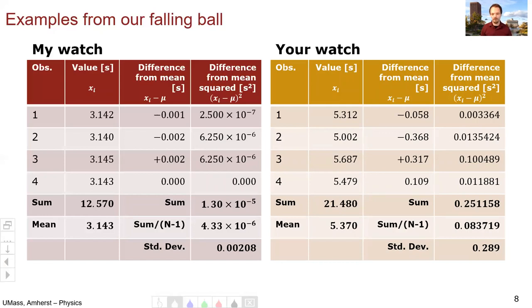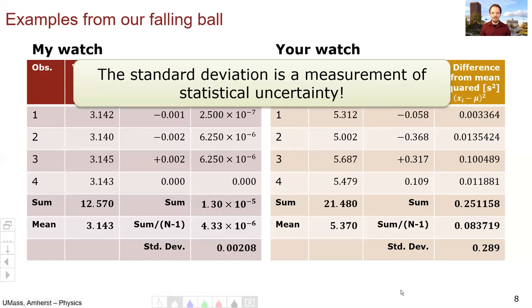So here are our two standard deviations. You can see they're quite different, which we would expect. My watch had much less spread. So it has a much smaller standard deviation than your watch did, has a much larger standard deviation. The standard deviation is therefore a measurement of the statistical uncertainty of your data.